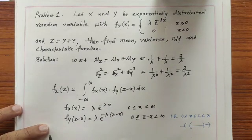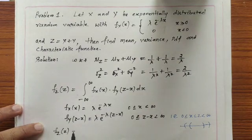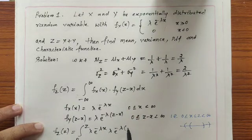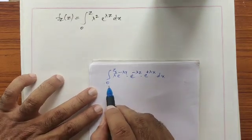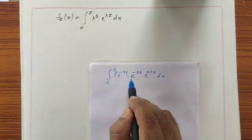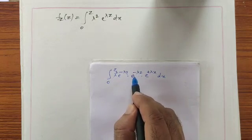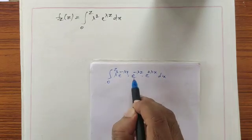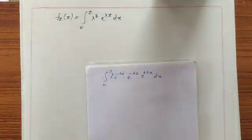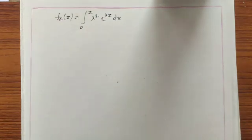Therefore, f_z(z) equals the integral from 0 to z of f_x(x)·f_y(z − x) dx, which is the integral from 0 to z of λ·e^(−λx) · λ·e^(−λ(z−x)) dx. This gives λ² times the integral from 0 to z of e^(−λx)·e^(−λz+λx) dx. The e^(−λx) and e^(+λx) terms cancel, leaving λ²·e^(−λz) integrated over 0 to z.